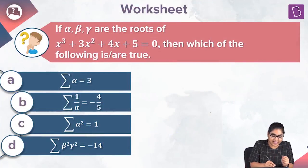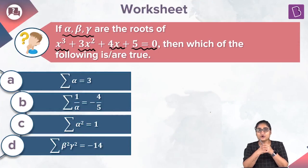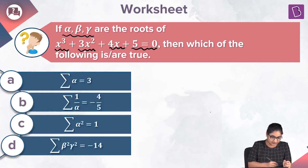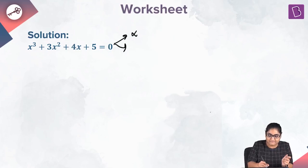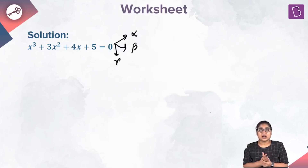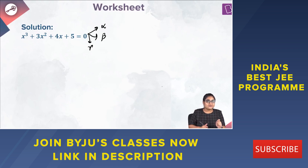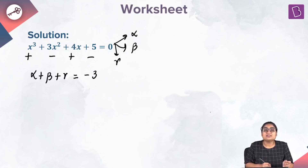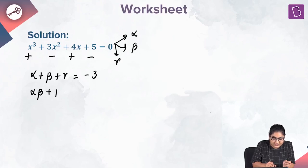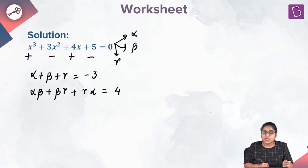In this question, alpha, beta, gamma are the roots of x cube plus 3x square plus 4x plus 5 equal to 0. We have to find which options are true. Using Vieta's formulas with the sign convention plus minus plus minus: alpha plus beta plus gamma equals minus 3, alpha beta plus beta gamma plus gamma alpha equals 4, and alpha beta gamma equals minus 5.